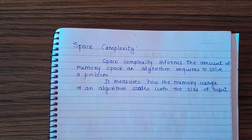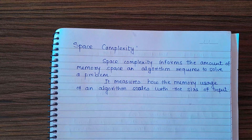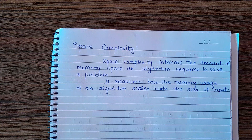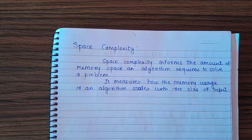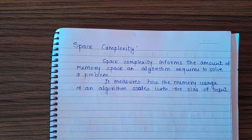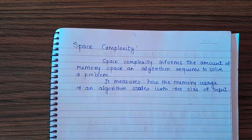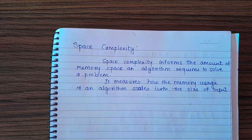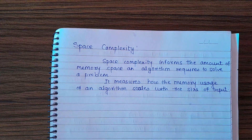Hare Krishna. Space complexity tells us about the amount of memory space an algorithm requires to solve a problem. It measures how the memory usage of an algorithm scales with the size of input. Basically, it informs us about the additional space — beyond the space occupied by the input — taken by an algorithm to solve a problem.